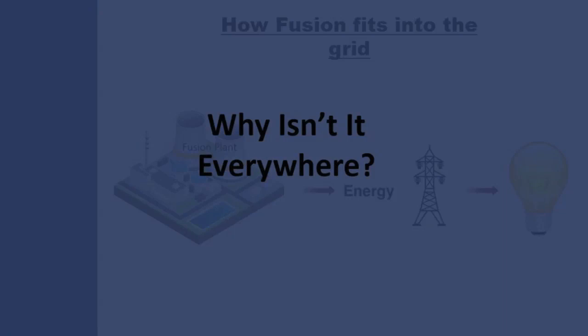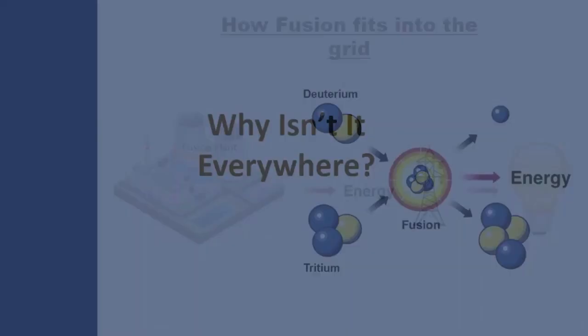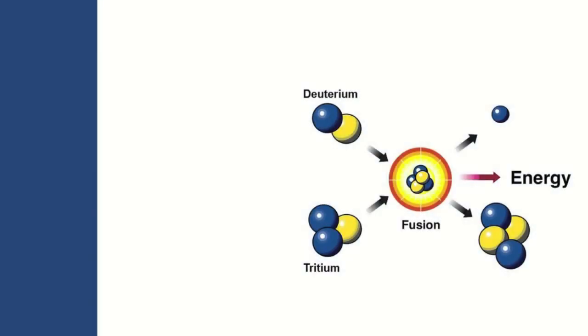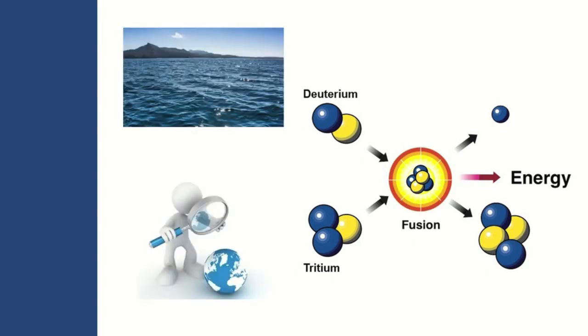So all this brings up the question, why isn't fusion everywhere? Other than being technically challenging and expensive, one of the main issues is caused by the lack of tritium on Earth. Deuterium is found in abundance in our oceans, in concentrations of around 380 parts per million.